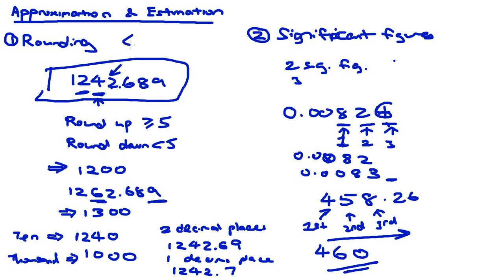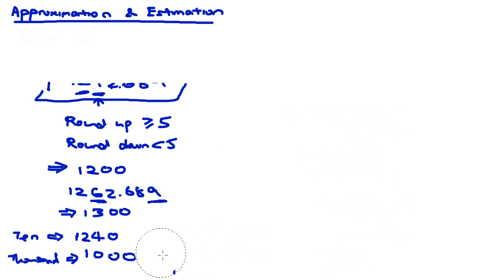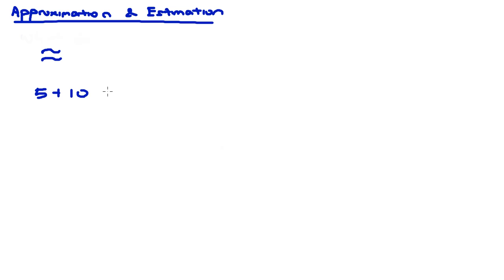So why do we learn rounding and significant figures? Approximation and estimation is a great way to do quick mental calculations. There is a special symbol for approximation — a curvy equals sign (≈) — meaning 'approximately equal to.' For instance, 4.82 + 9.98 is approximately equal to 15.